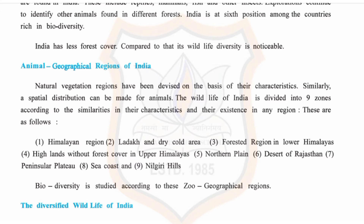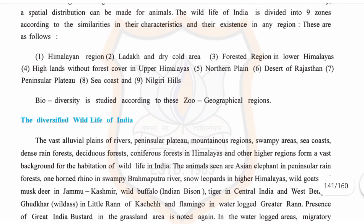The remaining zones are: fifth, the Northern Plain; sixth, the Desert of Rajasthan; seventh, the Peninsular Plateau; eighth, the Sea Coast; and ninth, the Nilgiri Hills. Biodiversity of India is studied according to these zoogeographical regions.